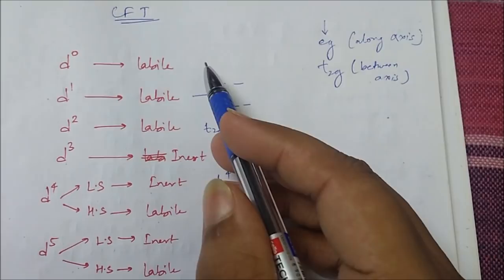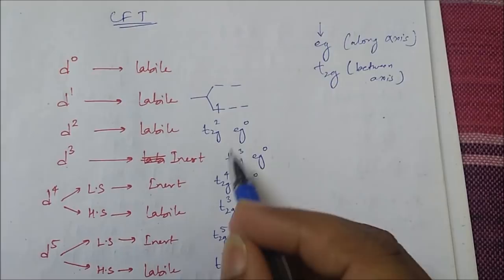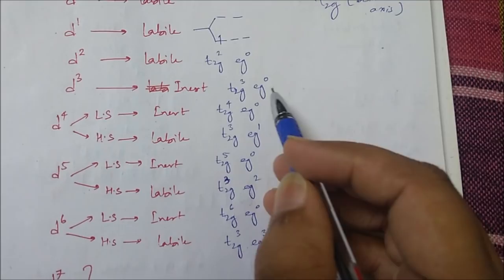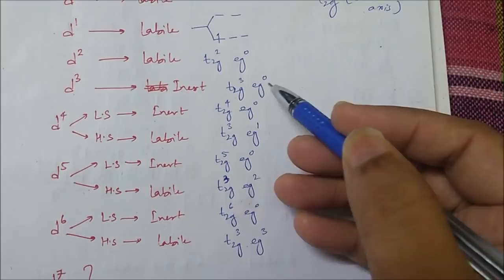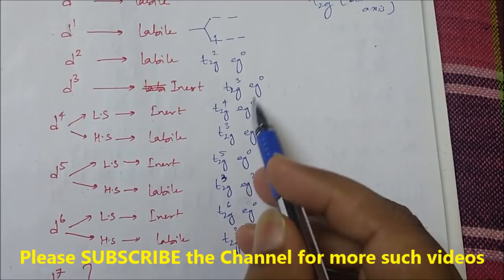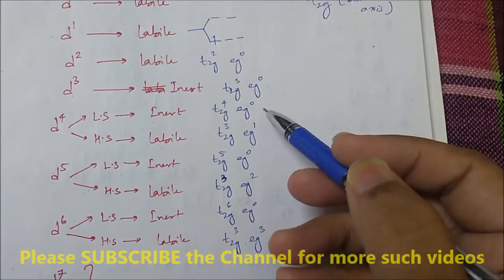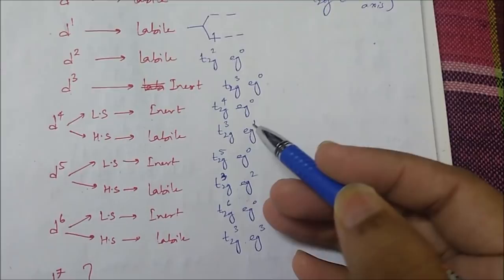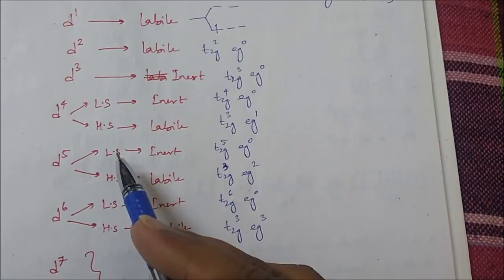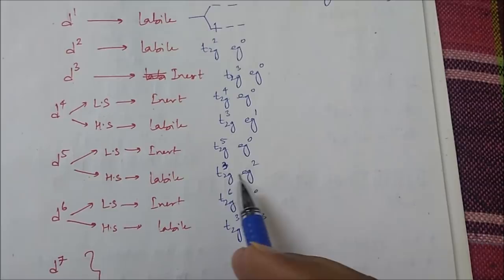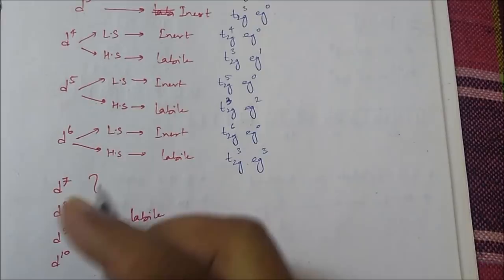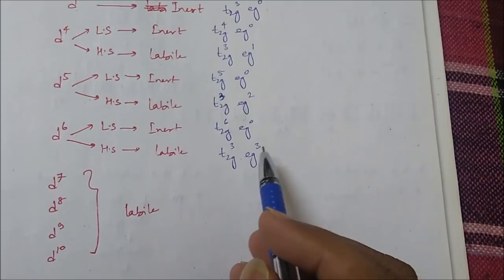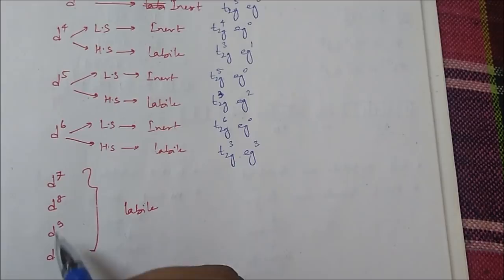If only t2g is filled and eg is empty, the complex is inert. For d⁰, d¹, d² — the d orbitals are mostly empty so approaching ligands can come easily, making them labile. d³ fills only t2g with no eg electrons — inert. d⁴ low spin: eg empty, inert; d⁴ high spin: one eg electron, labile. d⁵ low spin: inert; d⁵ high spin: two eg electrons, labile. d⁶ low spin: inert; d⁶ high spin: labile. d⁷, d⁸, d⁹, d¹⁰ all have eg electrons in either low or high spin — all labile.